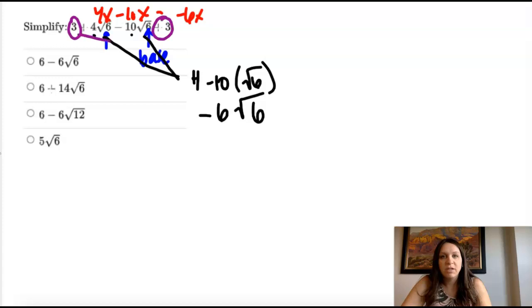Three plus three is six. So six minus six square roots of six and this stays together. This term means negative six times the square root of six. So our answer would be this one.